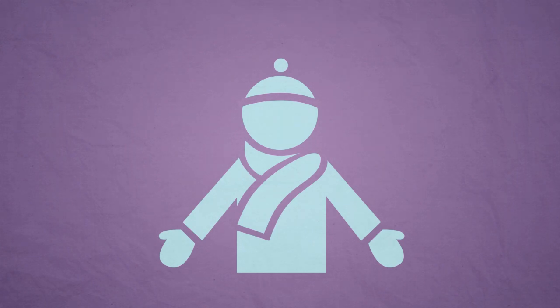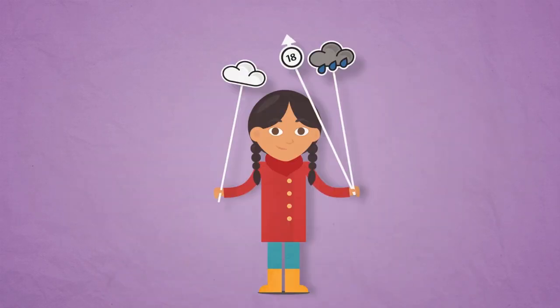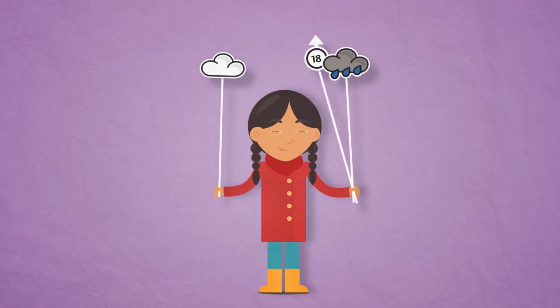If there is low pressure, then it's normally cloudy, wet, and windy. So it's a good time to put on a raincoat and wear your wellies.